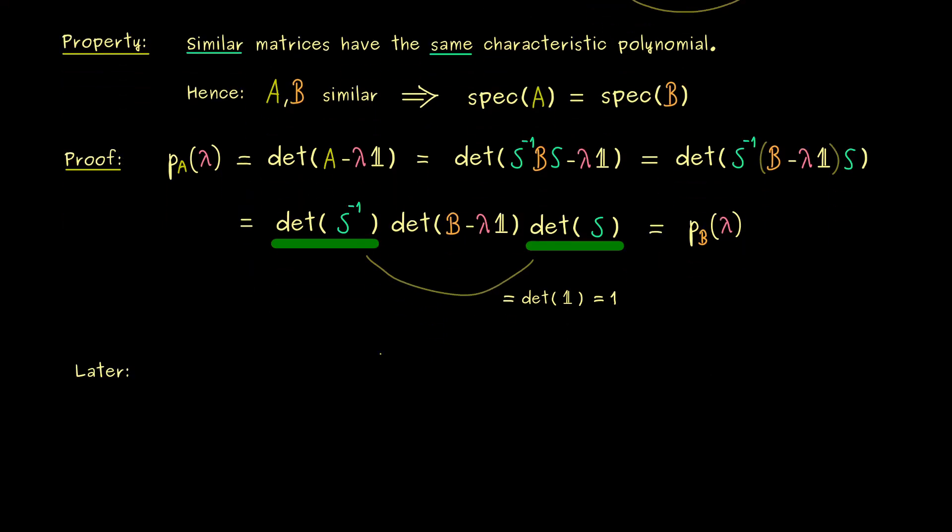And in fact, this property is something we will use later a lot, when we want to find so-called perfect coordinate systems. In some sense we could say, this is the reason we are so interested in the eigenvalues and eigenvectors.